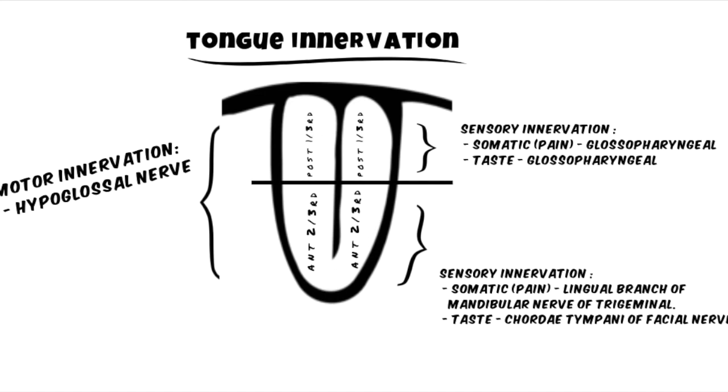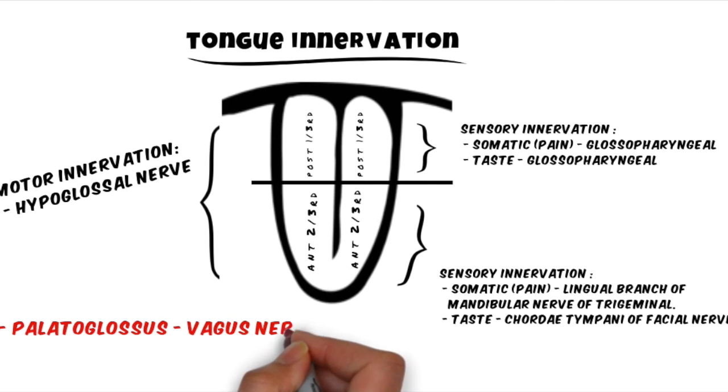There is one exception about the motor innervation. Of all the muscles of the tongue, the palatoglossus is innervated by the vagus nerve, not by the hypoglossal nerve.